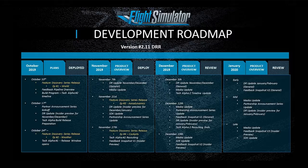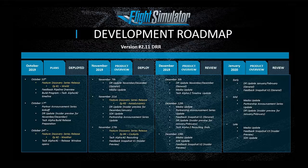December 12th: another media update, a partnership announcement series update, feedback snapshot version 1 for the general public, insider preview of the development roadmap update for January and February, and tech alpha 2 recruiting ends. December 19th: another media update, an SDK update, and feedback snapshot version 2 insider preview. In early January: a general development roadmap update and general feedback snapshot version 2. Mid January: another media update, partnership announcement series update, and insider preview of a development roadmap. Late January: another media update, insider preview feedback snapshot version 3, and an SDK update.